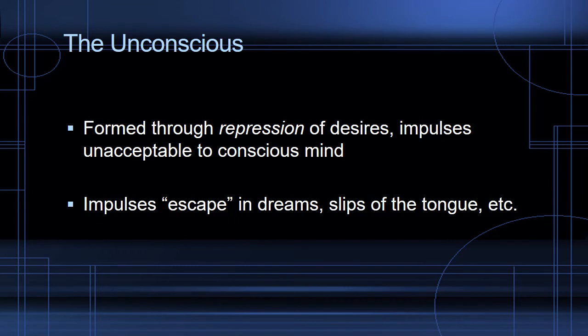How is the unconscious formed? It's formed primarily through repression of desires — in particular, desires and impulses unacceptable to our conscious mind or our social world: sexual desires, violent desires, things we're not allowed to express or that have been forcibly pushed down. These impulses try to find expression through various ways — in dreams, in slips of the tongue, and in various symptoms of mental and physical distress.